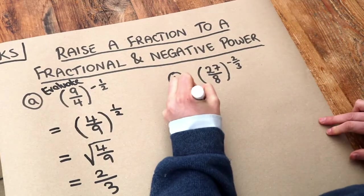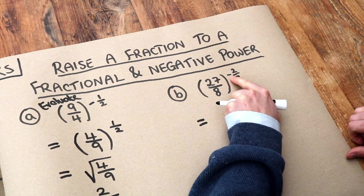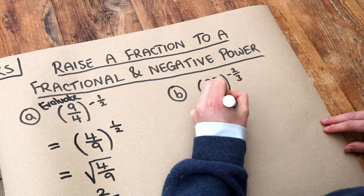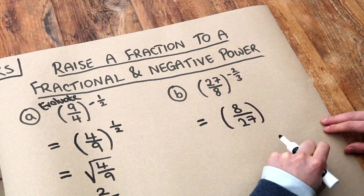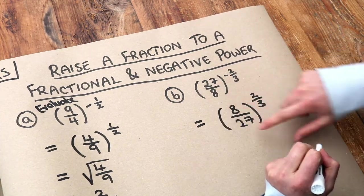What about this one? Again we've got a negative power so I'm going to deal with the minus first in the power and flip this fraction as a result. So that's going to become 8 over 27. And we've now dealt with that minus. We're just left with the power of 2 thirds. We don't flip this fraction by the way, it's just this one here.